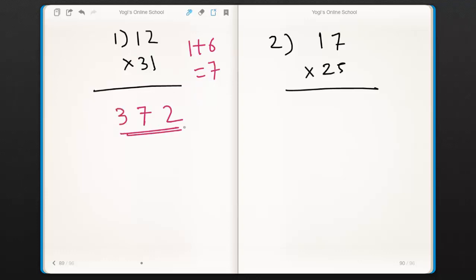What we did? First we multiplied last digits of both numbers, that is 2×1. It gives us the last digit of our answer.